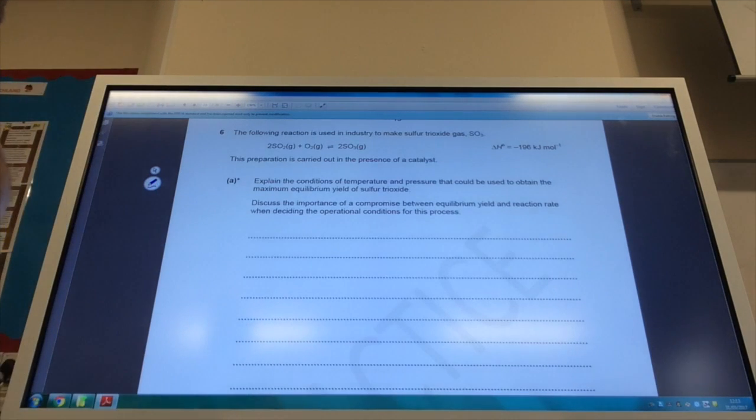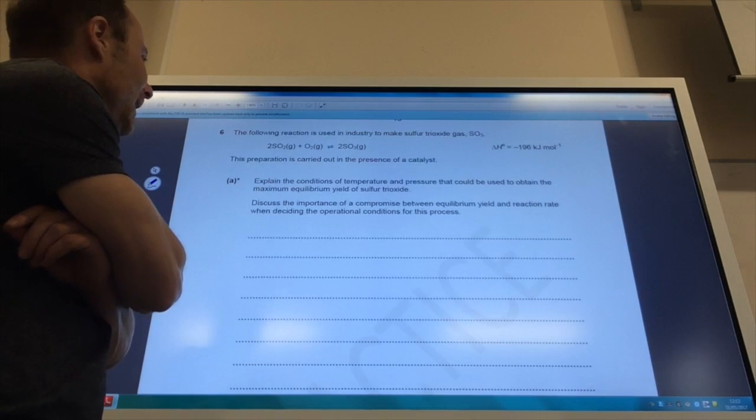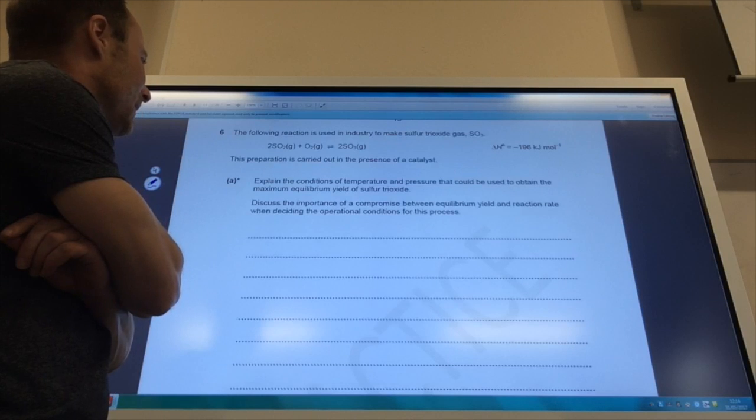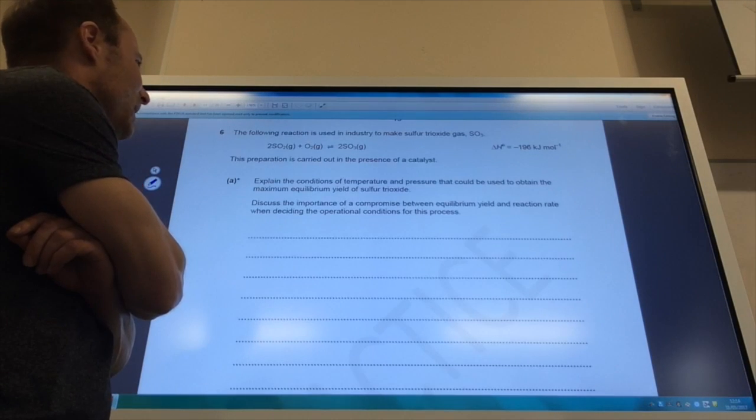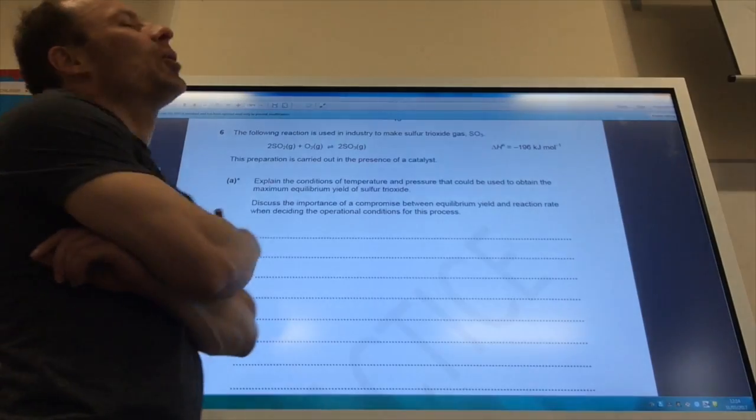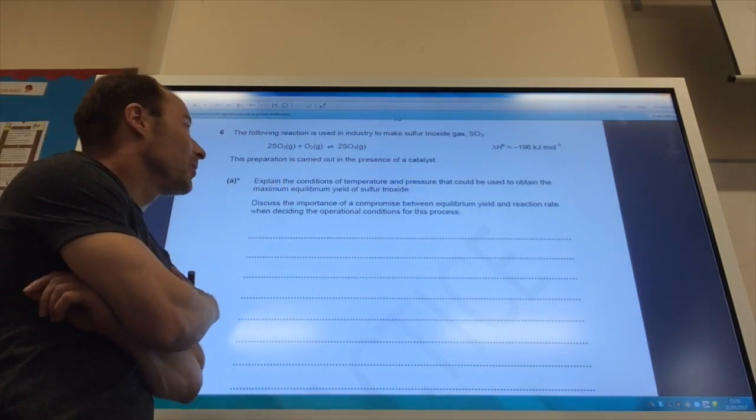Right, so they've now given me the reaction rates of the trioxide, and it wants me to explain the conditions of temperature and pressure that could be used to get a maximum yield, and then look at a compromise between yield and reaction rates. So this question is an absolute gift. So let's go through this.